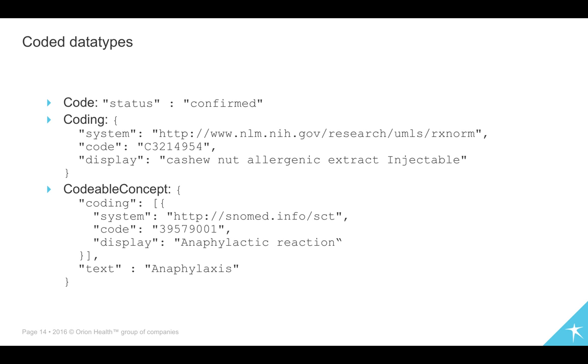I want to touch on coded data types just for a second. We have actually three and a half data types which are coded. There's the code data type, which we tend to use for structural things, such as the status of something. We then have the coding element. And the coding element is one that links to an external terminology. And you can see in the example there, we have the system, which in this case is RxNorm. We have the code, which is the code within that system. And then we have the display, which is how that terminology describes that concept. And then the third sort of coded data type is the codeable concept. And this is the one that you're most commonly going to see inside of FHIR.